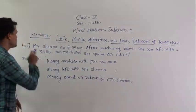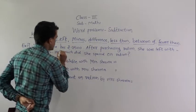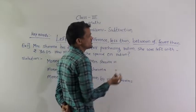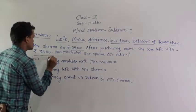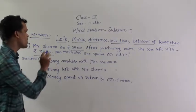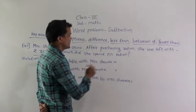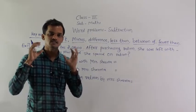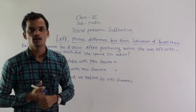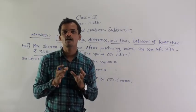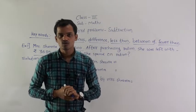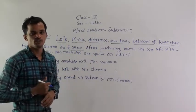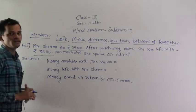Word problem: Mrs. Sharma has rupees 9500. After purchasing ration, she was left with rupees 3685. How much did she spend on the ration? First, read the word problem twice, understand what is given, and decide which operation to use. Here, we use subtraction.